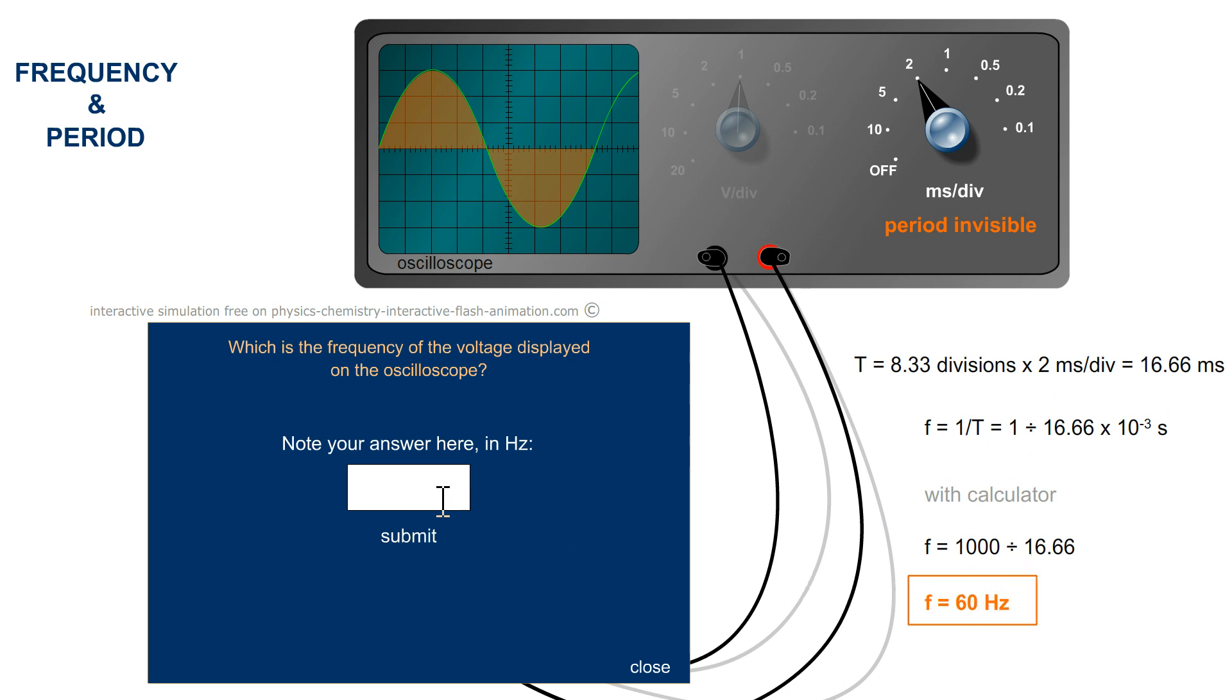60 hertz is the frequency of the mains voltage, the one at the household sockets. But in other countries the mains frequency can be 50 hertz. That's it for this video.